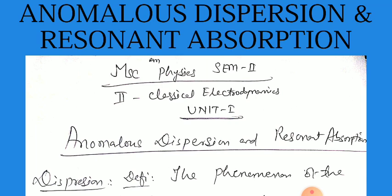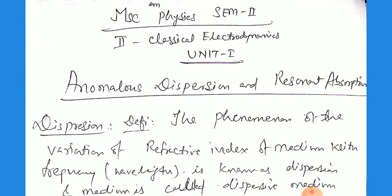The topic for today is Anomalous Dispersion and Resonant Absorption. We will cover: what is dispersion, what is Anomalous Dispersion, the conditions when this dispersion is considered, and what the resonant expressions will be. So we start from the definition of dispersion.